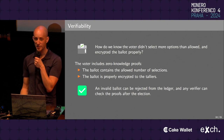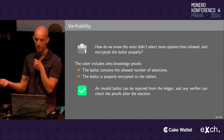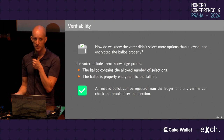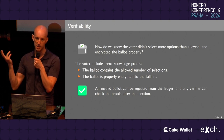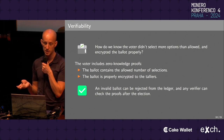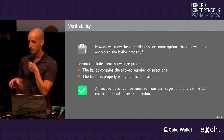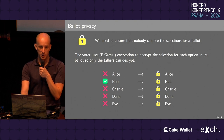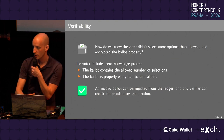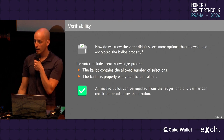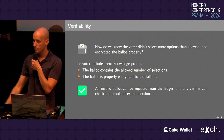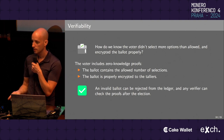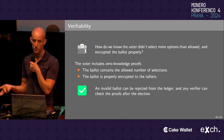We need to make sure the voter didn't select more options than allowed, that they actually encrypted the ballot so the counters can decrypt it later, and that they didn't just throw random nonsense onto the blockchain. So we include two separate zero-knowledge proofs: one proves in zero-knowledge that the ballot contains precisely the allowed number of selections, and another proves that the ballot is properly encrypted to the tallyers. Both are possible because of the structured nature of El-Gamal encryption. An invalid ballot can be rejected from the ledger before it even goes on, and any verifier can check these proofs.